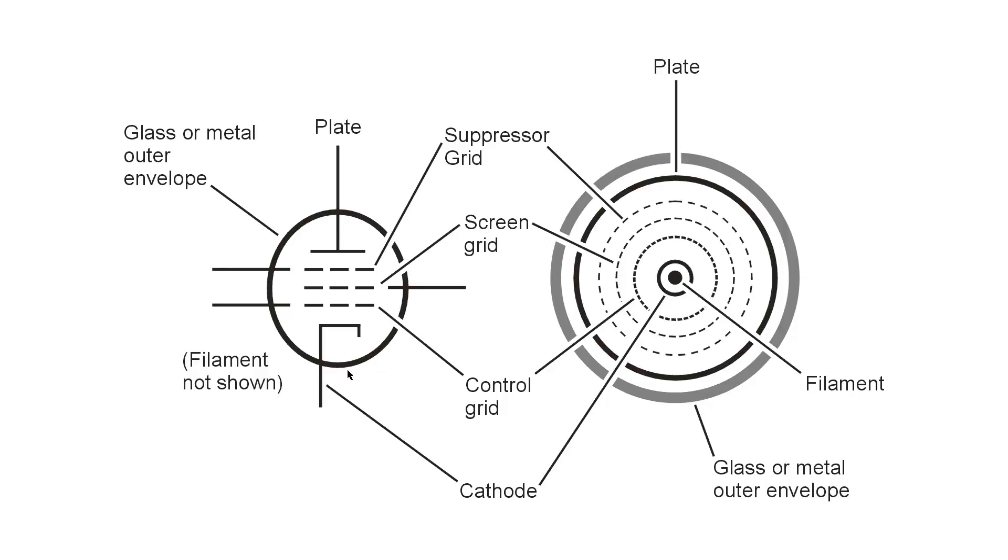But the schematic symbol for a tube like this or any other vacuum tube does not really show the true state of affairs when it comes to how the electrons flow through the tube. That is shown on the right here in this pictorial diagram, a sort of a cutaway view as you would see a vacuum tube looking straight down at it from the top.